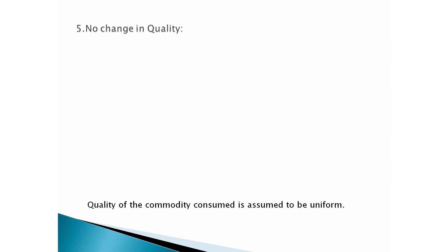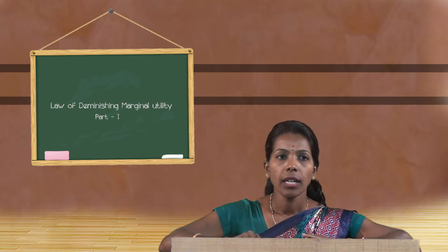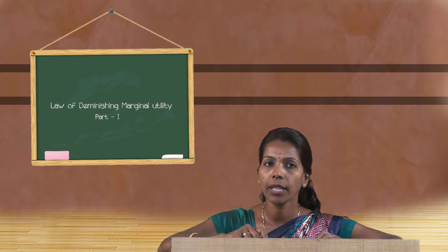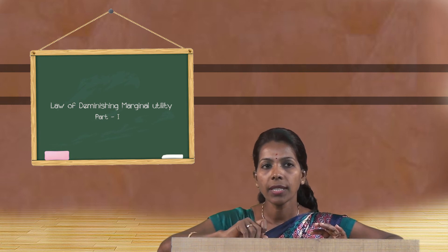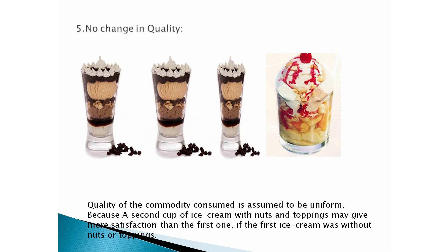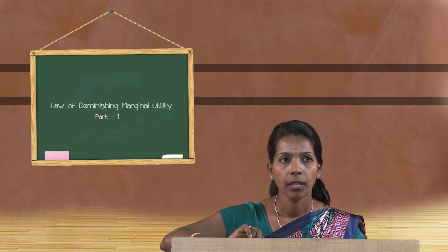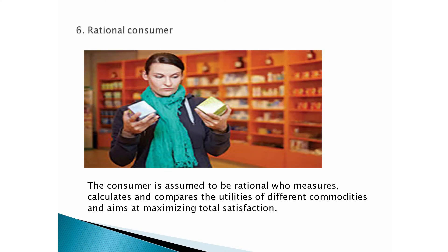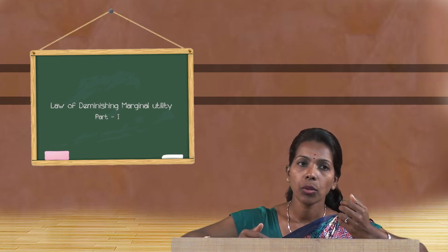The fifth assumption is no change in quality. The quality of the commodity consumed must be uniform, because a second cup of ice cream with nuts and toppings may give more satisfaction than the first one without them. Therefore, quality must remain uniform. The sixth assumption is that the consumer is rational — the consumer measures, calculates, and compares the utilities of different units of commodities and aims at maximizing total satisfaction.